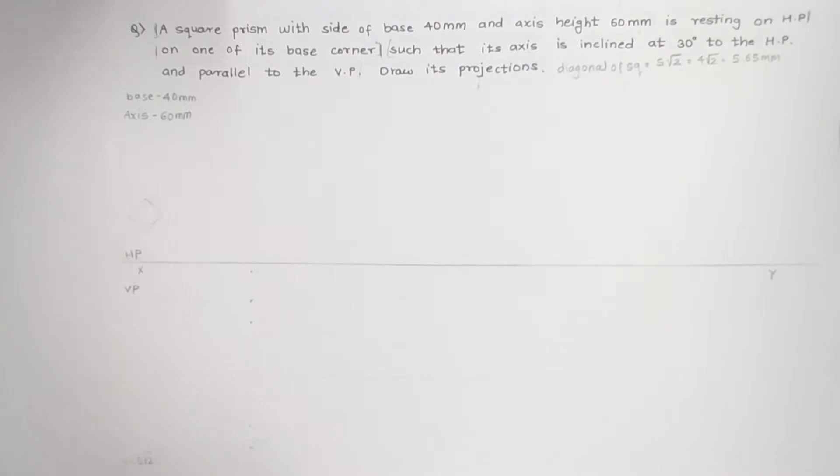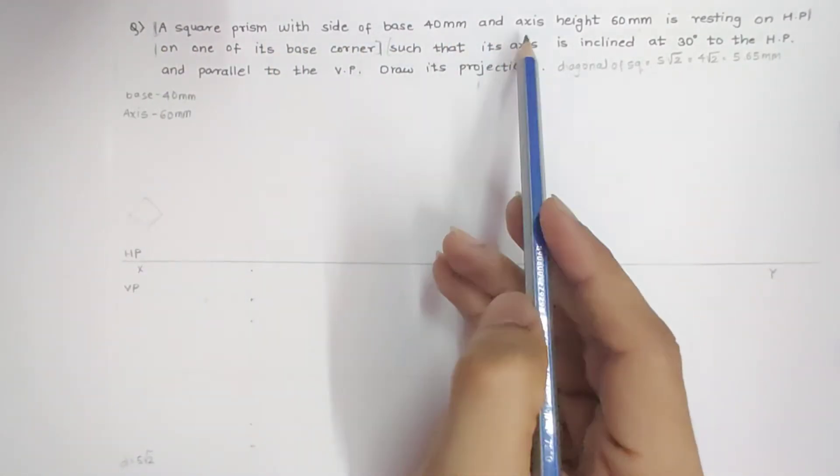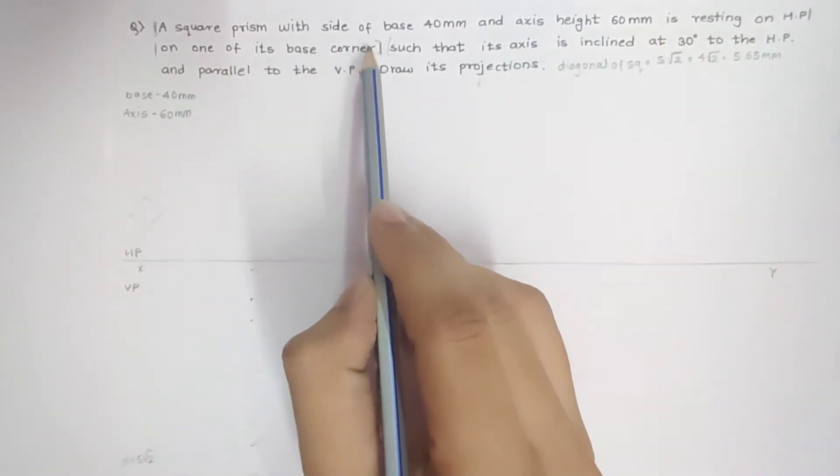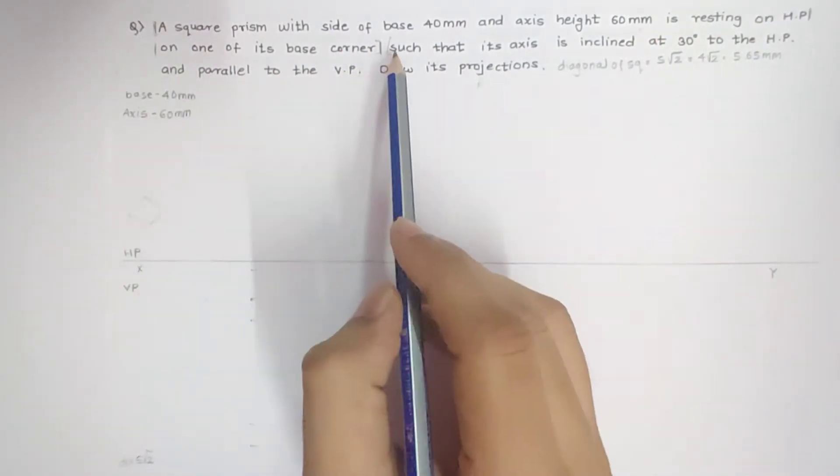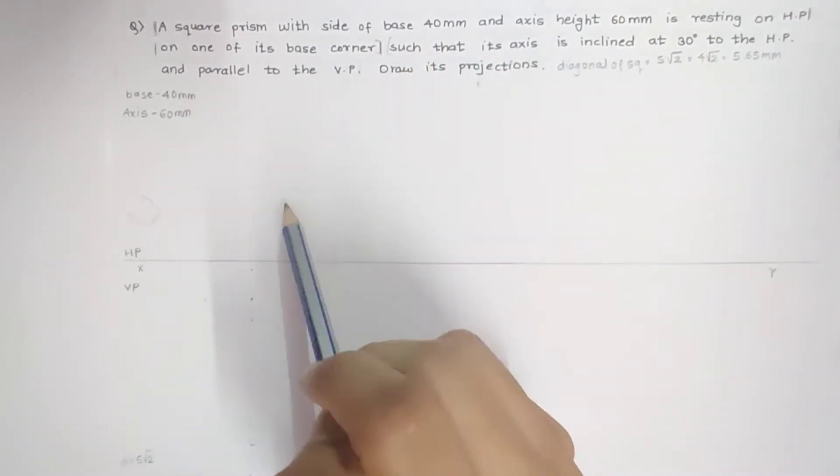Okay, let's start with a new problem. A square prism with side of base 40mm and axis height 60mm is resting on HP on one of its base corners. The axis is inclined at 30 degrees to the HP and parallel to the VP.